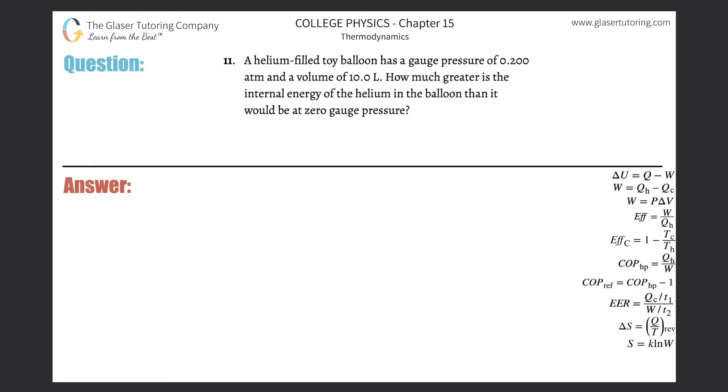Number 11, a helium-filled toy balloon has a gauge pressure of 0.2 atmospheres and a volume of 10 liters. How much greater is the internal energy of the helium in the balloon than it would be at zero gauge pressure?